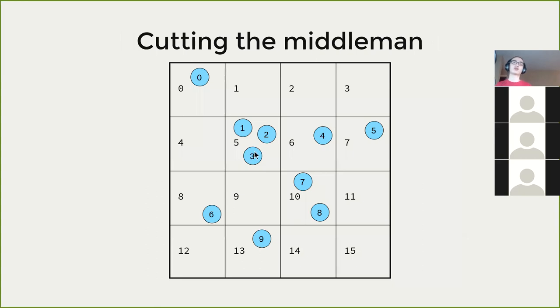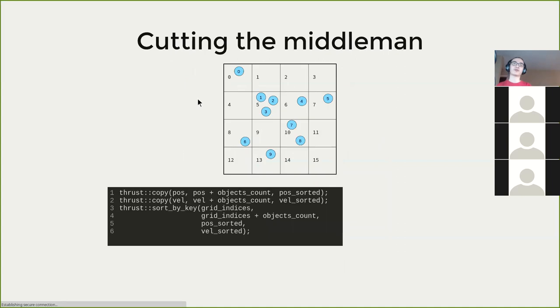So the next step is to cut the middleman that indices array. So what if our boid is already sorted like this from 0, 1, 2, 3, 4, 5 etc. That's the order of boids is the order of the grid. So naively, you probably just want to do this, not naively, just intuitively. That's the thing I want to do. I want to sort by key, use grid indices as a key and with the position and velocity as values. Notice we do need two separate arrays to store the sorted positions and sorted velocities in this case because the original position is still useful later.